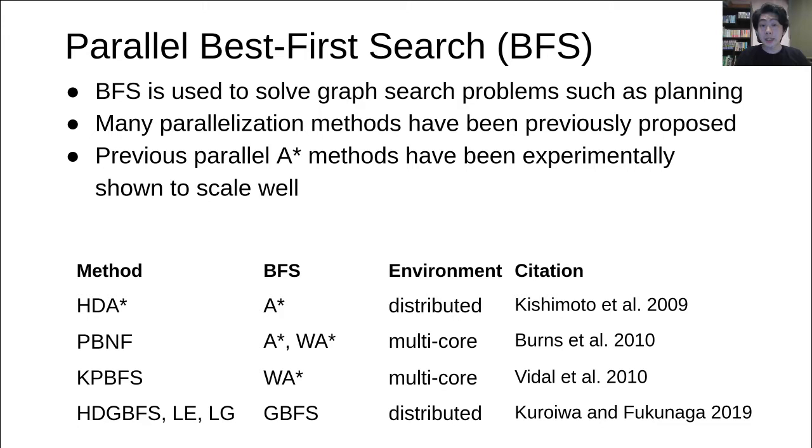To solve a graph search problem, including classical planning, best first search, BFS for short, is widely used. BFS is a class of algorithms including A-star, weighted A-star or WA-star, and greedy best first search, GBFS for short.